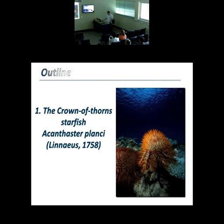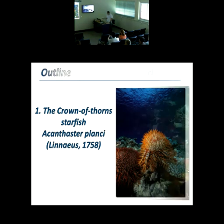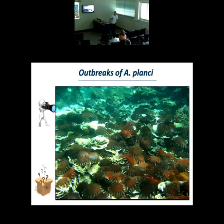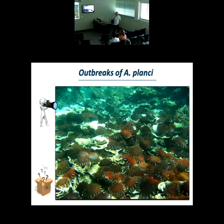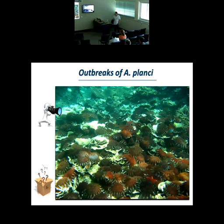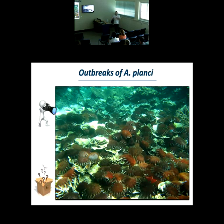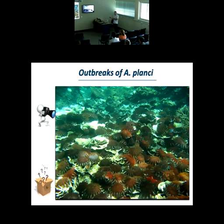The normal density of these animals is only one or two starfish per hectare, and in those conditions there is no problem. But when they reach outbreak levels, they can reach up to 56,000 starfish per hectare. That's a huge problem. We don't know what happened at the beginning of outbreaks or what happened at the end of outbreaks.